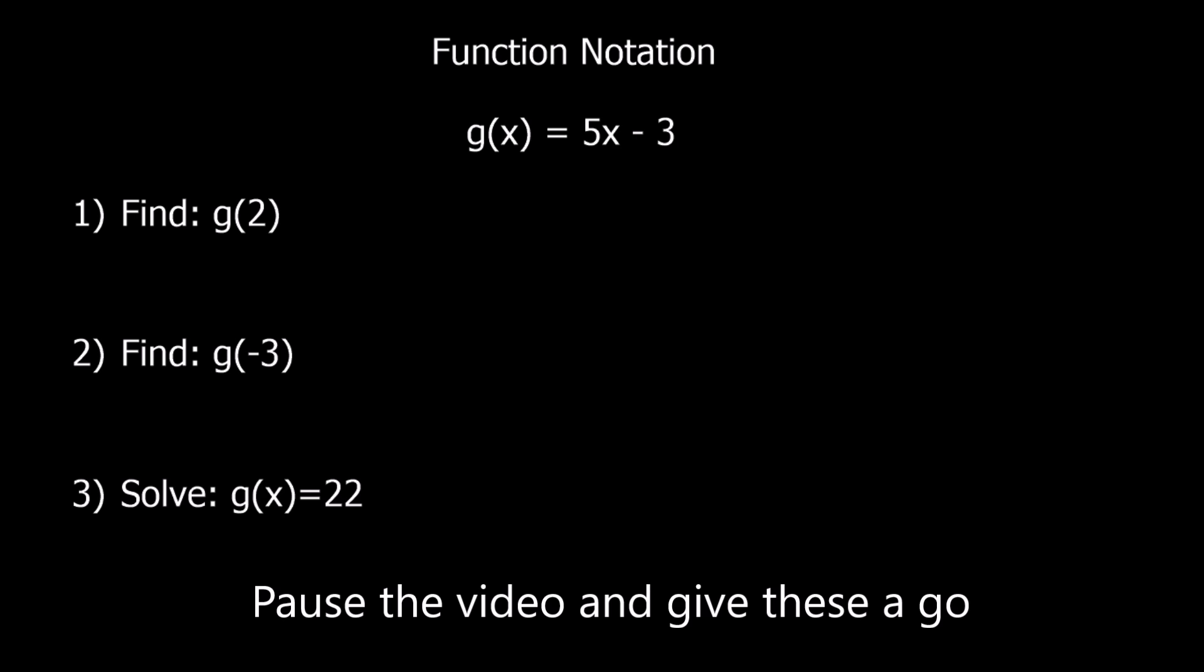Okay, here's another one. This time we've got g of x. g of x is 5x minus 3. It doesn't change anything. We've still got an input and an output. The function is just called g instead of f.